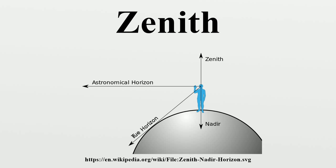Origin: the word 'zenith' derives from the inaccurate reading of the Arabic expression meaning 'direction of the head' or 'path above the head,' by medieval Latin scribes in the Middle Ages.